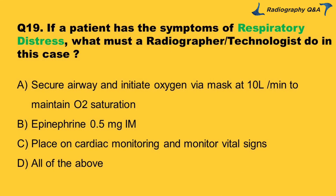Question 19: If a patient has symptoms of respiratory distress, what must a radiographer/technologist do? Option A: secure airway and initiate oxygen via mask at 10 L/min to maintain O2 saturation. Option B: epinephrine 0.5 mg IM. Option C: place on cardiac monitoring and monitor vital signs. Option D: all of the above. Right answer is Option D.